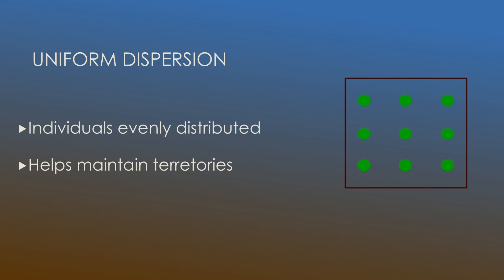Next we have uniform dispersion and as you can see in the picture on the right this is when individuals are evenly distributed. A main benefit of this type of dispersion is that it helps maintain territories.